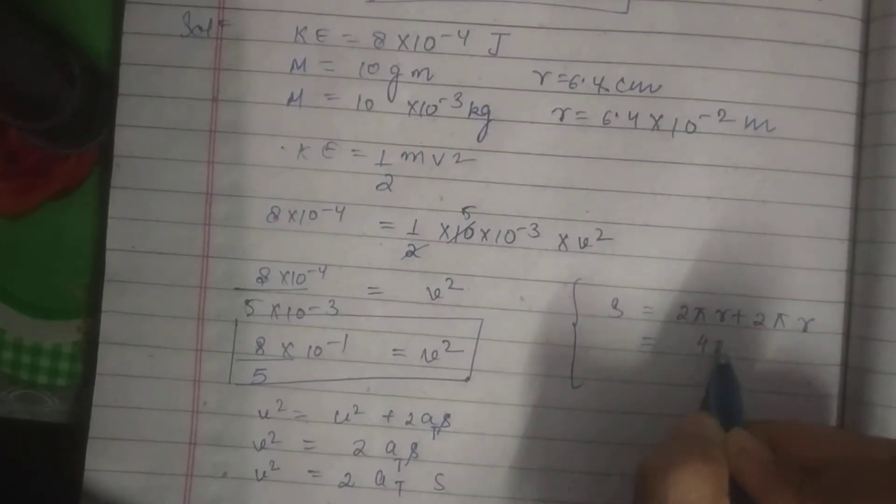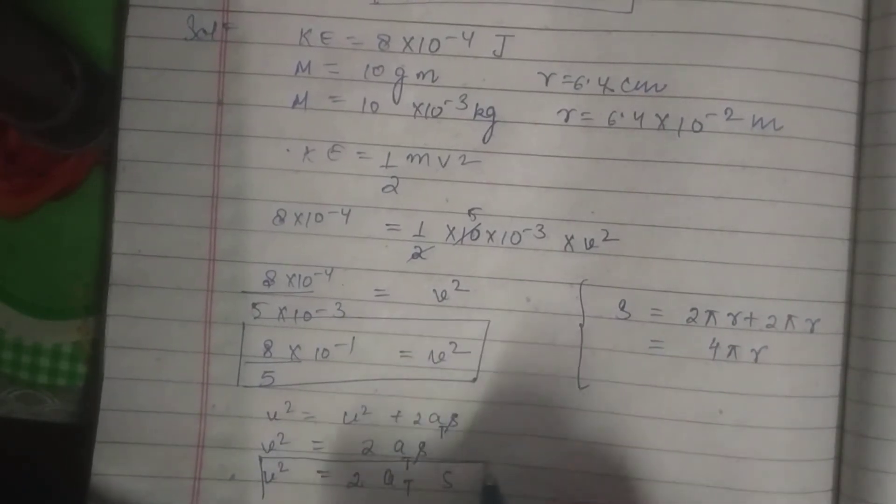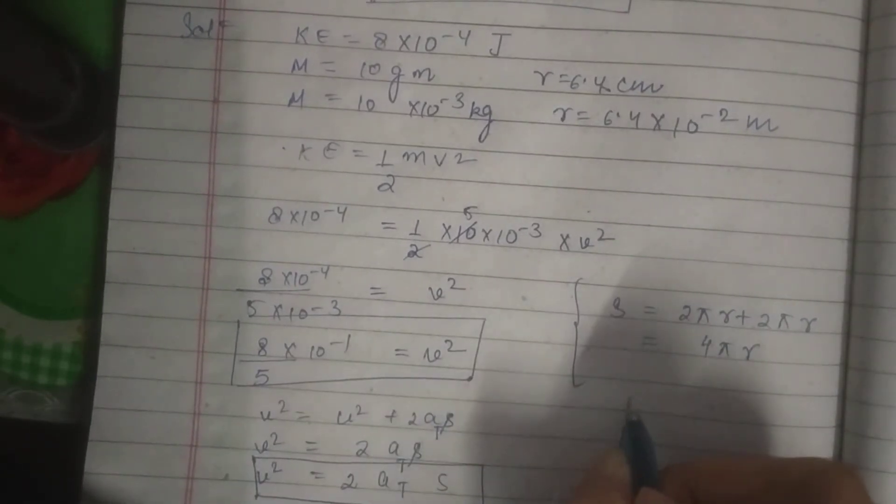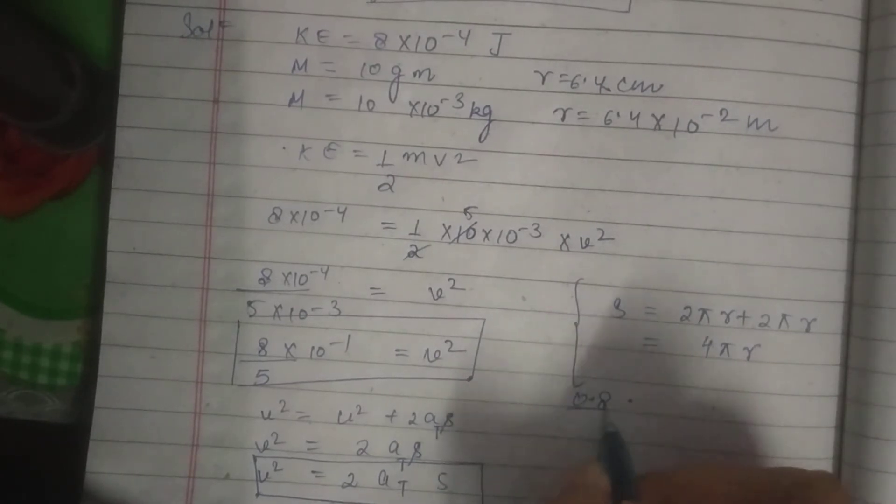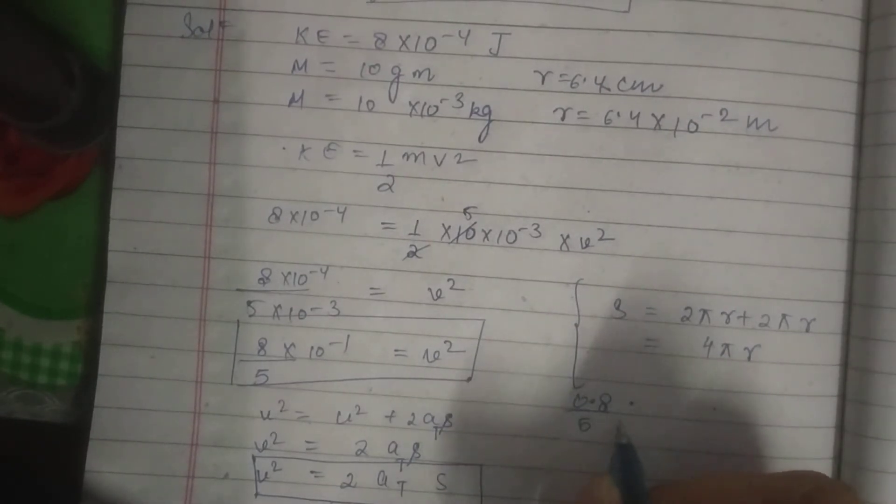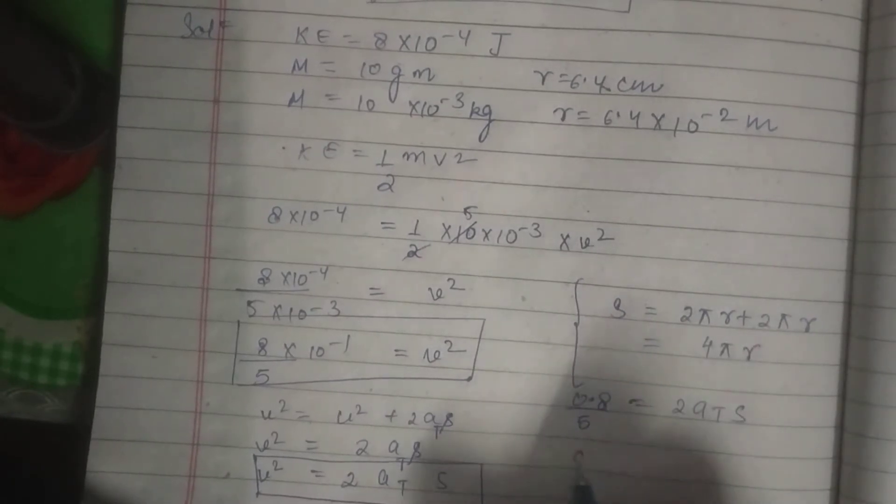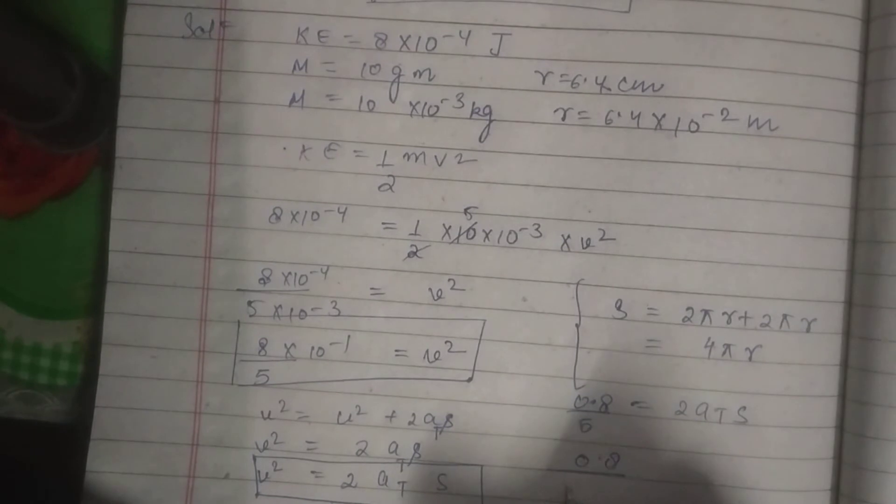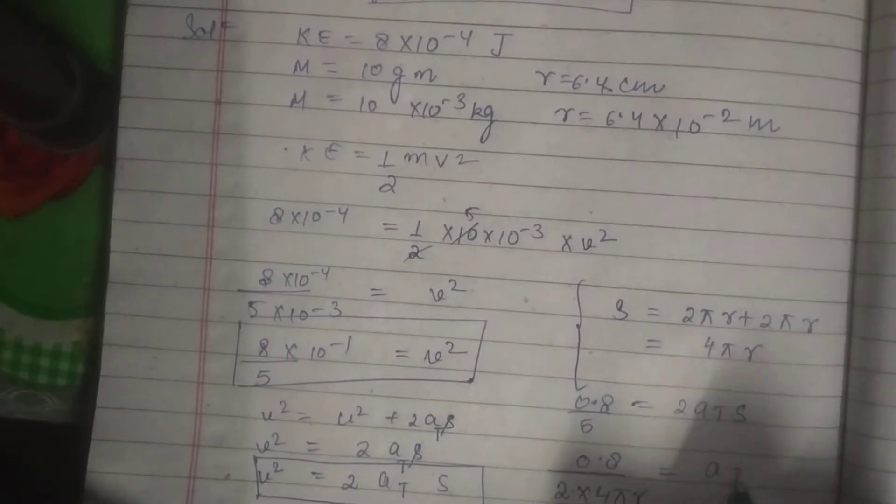So from this equation, we will put the value of all the quantities. We know v square is equal to 0.8 by 5 is equal to 2 a t s, and 0.8 by 5 by 2 multiplied by s is equal to 4 pi r is equal to a t.